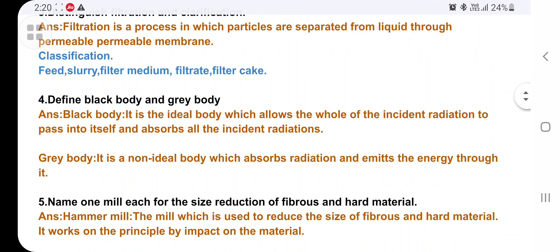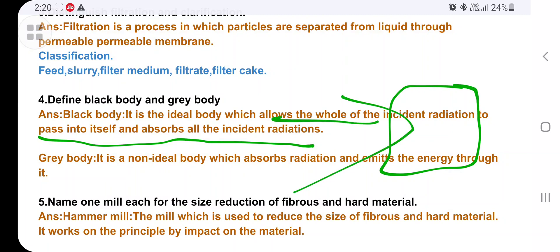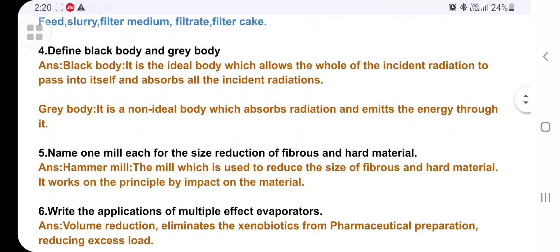Define black body and grey body. Black body is an ideal body which allows the whole of the incident radiation to pass into itself and absorbs all the incident radiation. It won't emit the radiation, it will just pass the incident radiation. Grey body is just opposite. It is a non-ideal body which absorbs radiation and emits the energy.